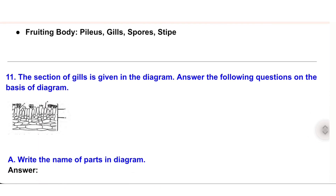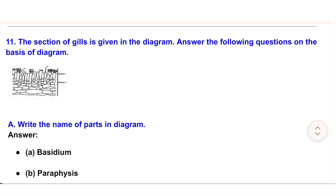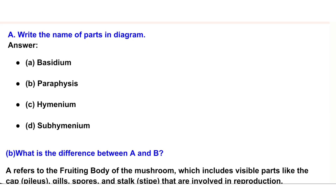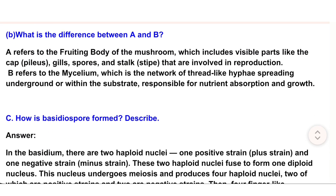11. The section of gills is given in the diagram. Answer the following questions on the basis of the diagram. (a) Write the names of the parts in the diagram. Answer: (a) Basidium, (b) Paraphysis, (c) Hymenium, (d) Subhymenium. (b) What is the difference between (a) and (b)? Basidium refers to the fruiting body structure involved in reproduction, including visible parts like the cap, gills, spores, and stipe. Paraphysis refers to the mycelium — the network of thread-like hyphae spreading underground or within the substrate, responsible for nutrient absorption and growth.